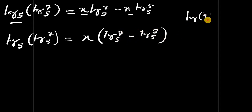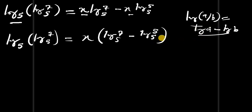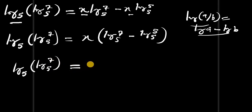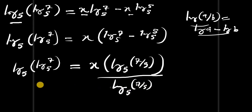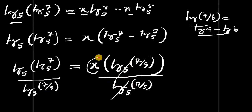Recalling that log(a) − log(b) = log(a/b), we apply this identity here: log_5(log_5(7)) = x · log_5(7/5). To make x the subject, we divide both sides by log_5(7/5), which cancels on the right, leaving x equal to the full left-hand expression.